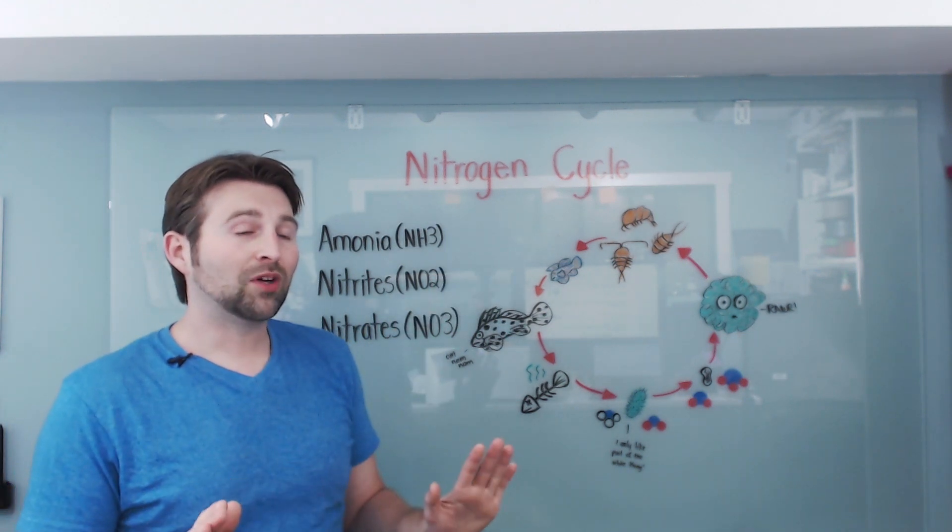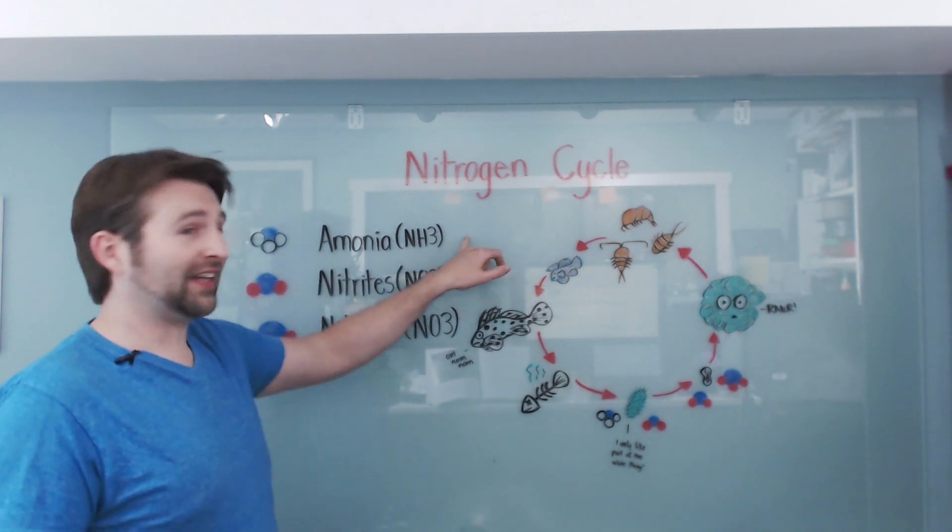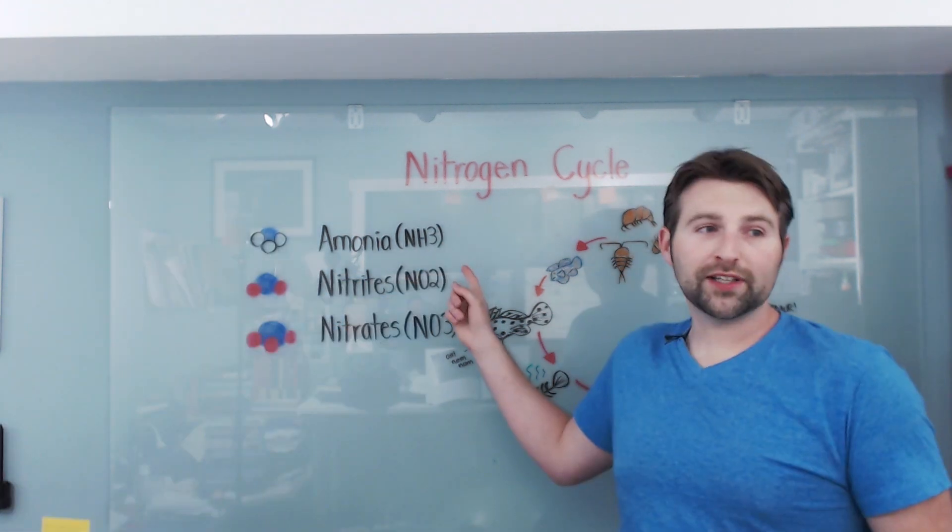Now corals on the other hand, they can handle a small bit of ammonia, but fish, not so much. So how does this work exactly? Well, it starts out with ammonia. Ammonia, or NH3.